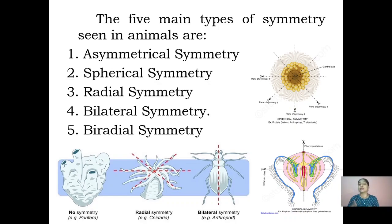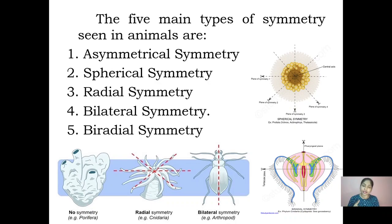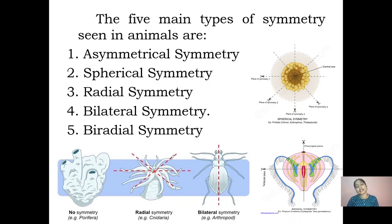In radial symmetry, equal halves are obtained in many planes provided it is a cylindrical form. We can use a circle as an analogy: any plane passing through the center yields equal halves. Bilateral symmetry means that along one single plane only, the organism is divided into two equal halves — the best example is the human body. Biradial symmetry is a combination of both radial and bilateral symmetry and is seen in cnidarians.